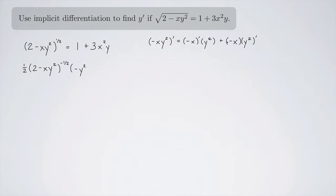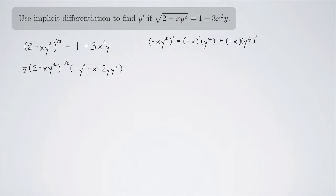And over here, we're going to have negative x times the derivative of y squared. The derivative of y squared is 2y, but remember, y itself is a function of x, so by chain rule, we have to take the derivative of y — you have to tack on a y prime. That's the tricky part of implicit differentiation — remembering that y itself is a function of x. So when you do the derivative of y squared, it's 2y and then the derivative of the inside, y prime.